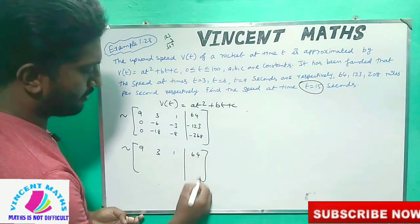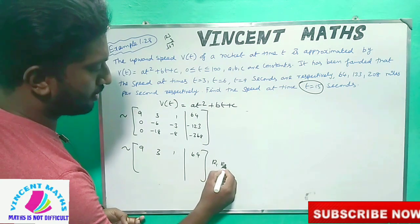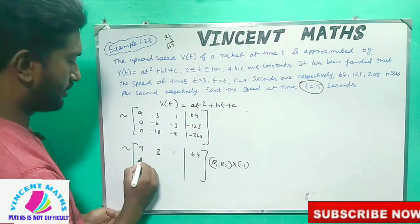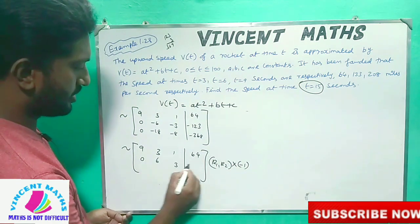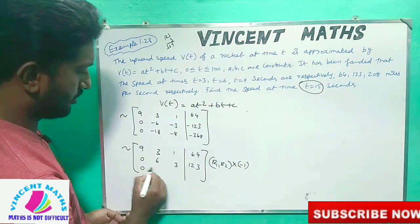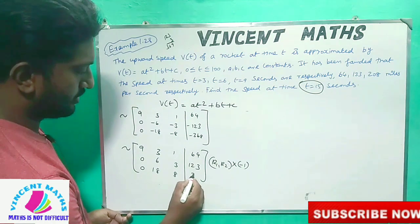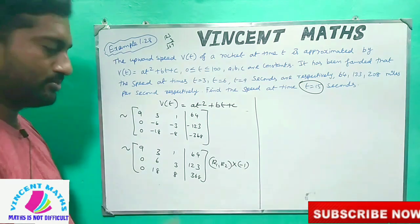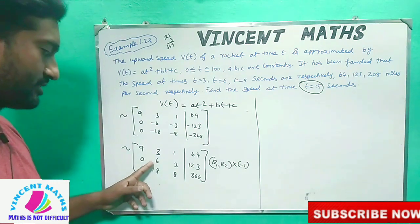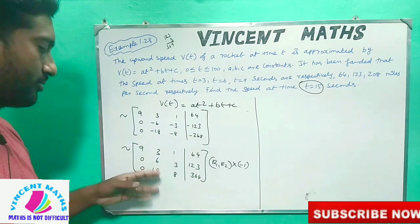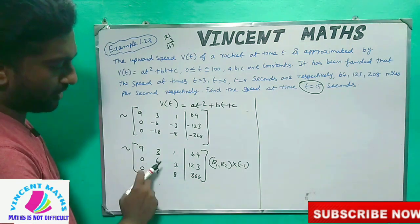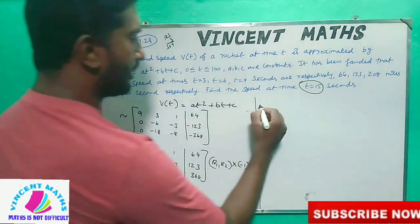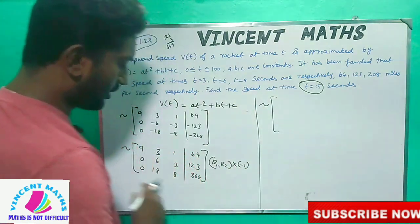Now we simplify. Row 1 is [9, 3, 1 | 64]. For row 2, we multiply by minus 1 to get [0, 6, 3 | 123]. Row 3 remains [0, 18, 8 | 368]. We need to convert the second column of row 3 to zero.